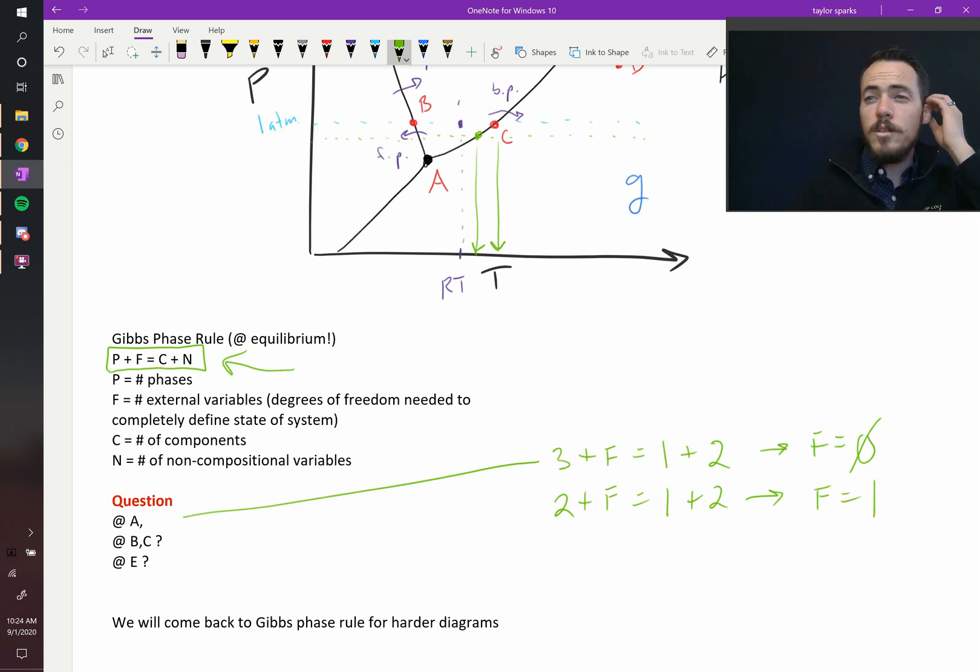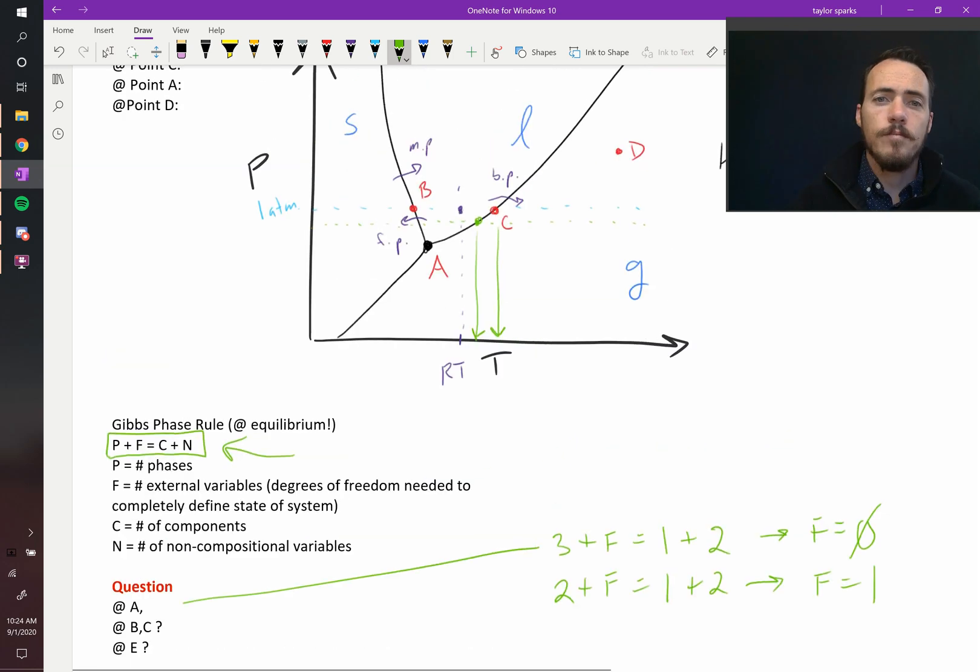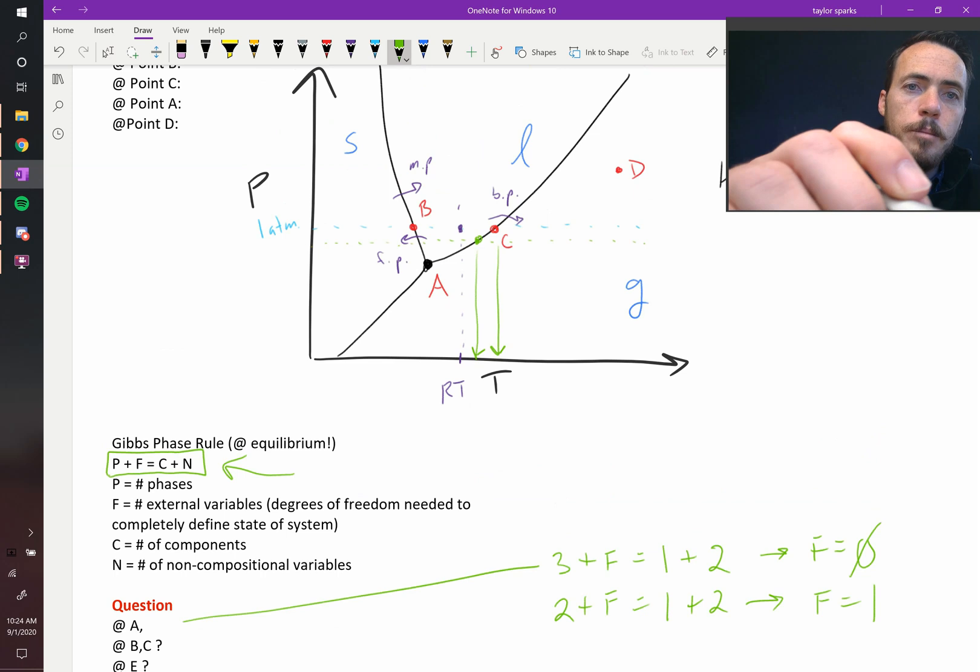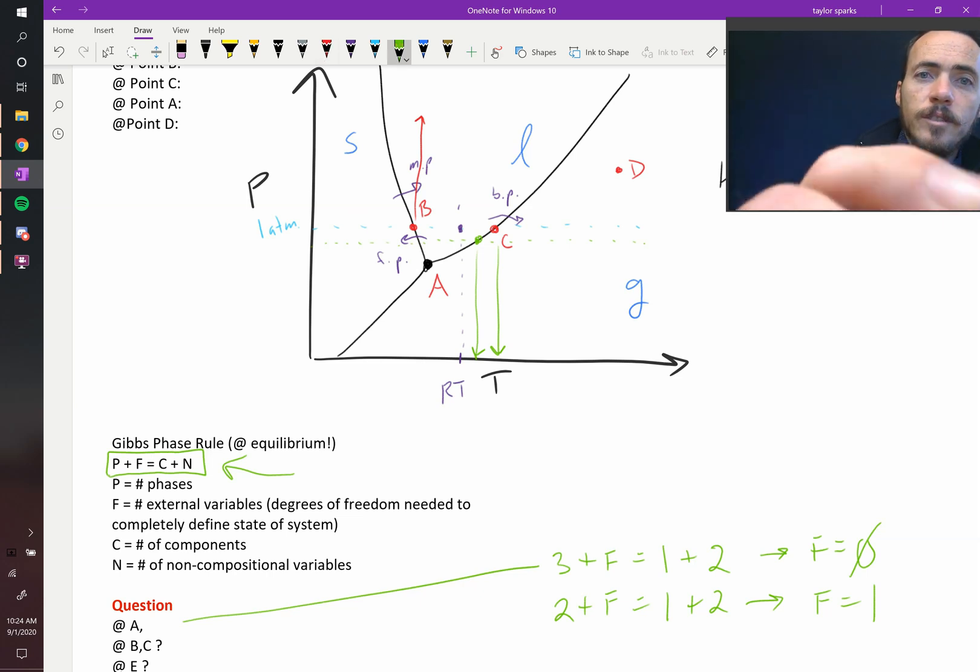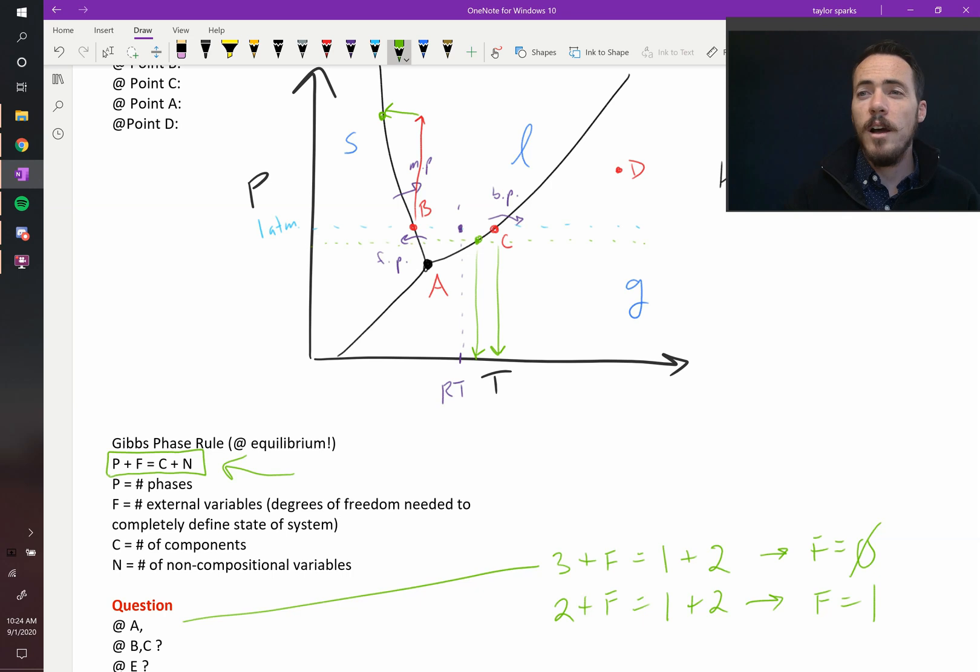So what this means is there's one degree of freedom. So let's look at the example for B. If I choose to change something in B, let's say that I choose to go up in pressure. If I go up in pressure, if I want to maintain those same two phases in equilibrium with one another, the system itself decides then that we have to go down in terms of temperature to that point. I can choose one, but I can't choose both.